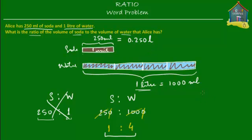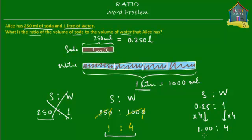Dividing the smaller unit by 1,000 gives 0.250 liters, or simply 0.25 liters. So the ratio of soda to water becomes 0.25 to 1. To make this more intuitive, convert the decimal to a whole number by multiplying both terms by 4 — since 0.25 times 4 equals 1 — giving 1 to 4. This confirms that regardless of whether you convert to milliliters or liters, the ratio of soda to water is still 1 to 4.